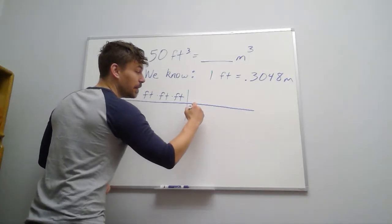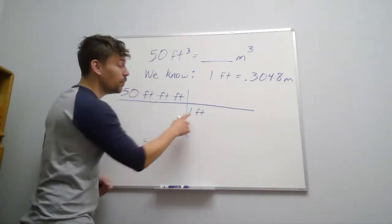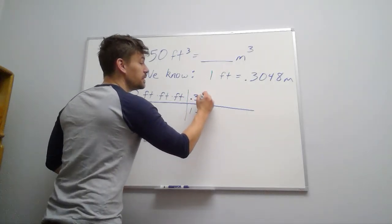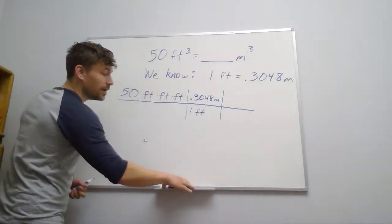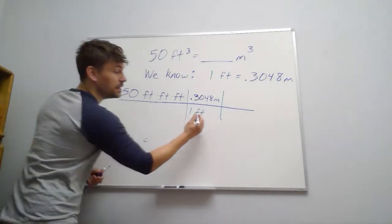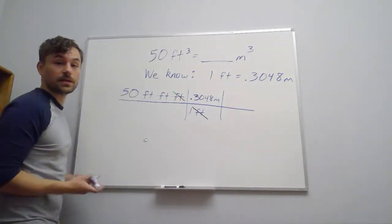So I'm going to use this conversion. One foot is 0.3048 meters. And what I know about that is that this unit of feet will cancel one of these on top.